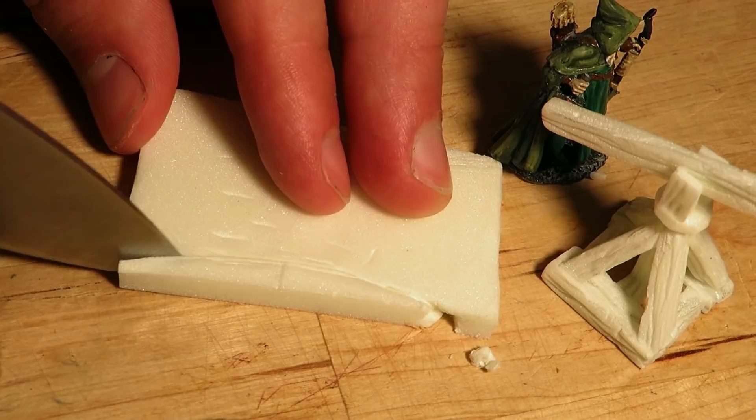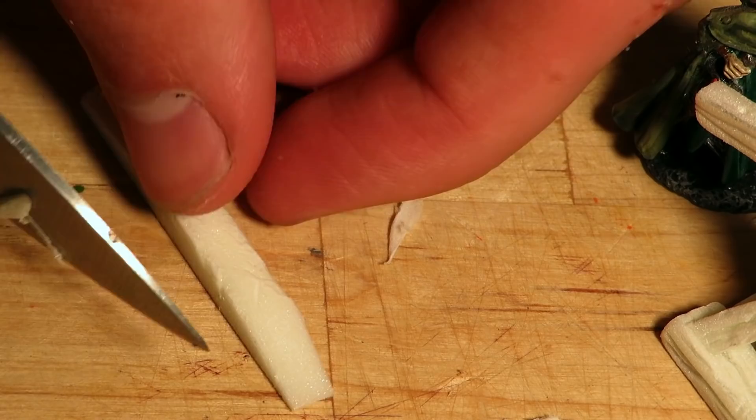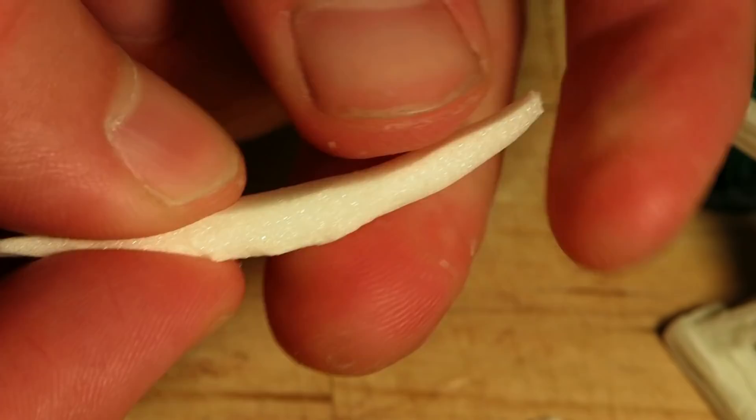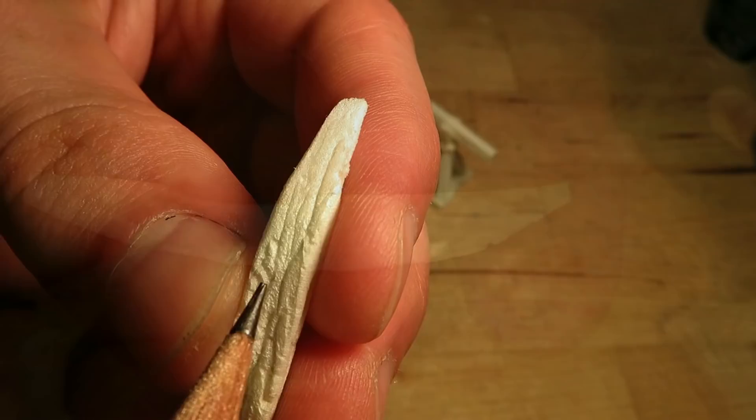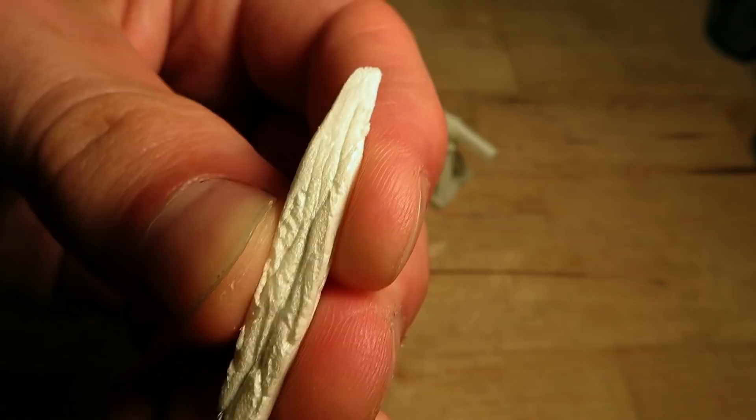I cut it like this, so it tapers towards the end. I was also able to shape it by pressing it between my fingers. By doing so, I was able to make the bow evenly thick. Then I added some wood textures, just as we did before. This is how it looks, and let's glue it onto the stock.